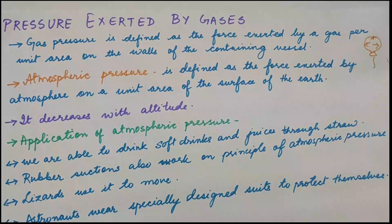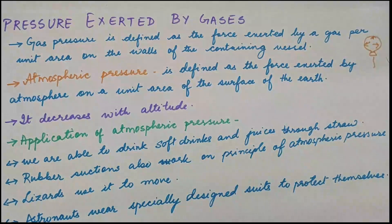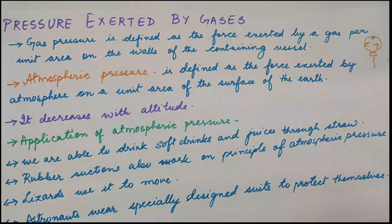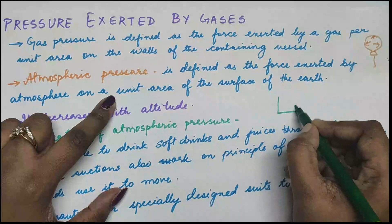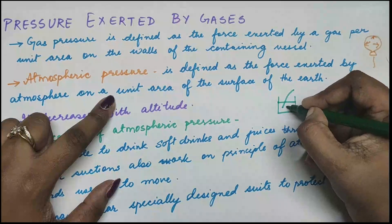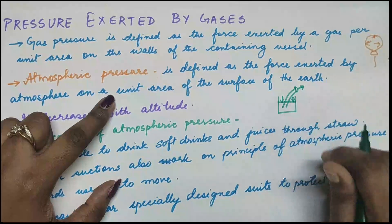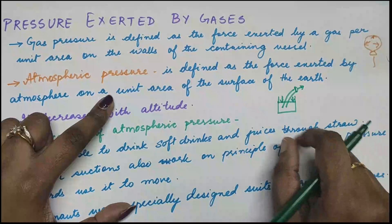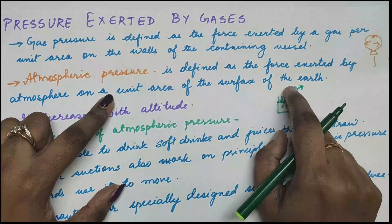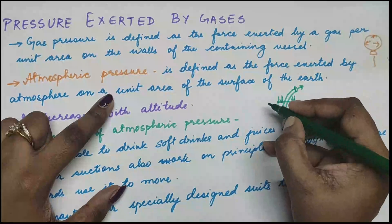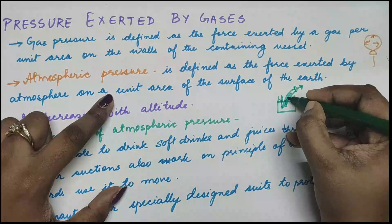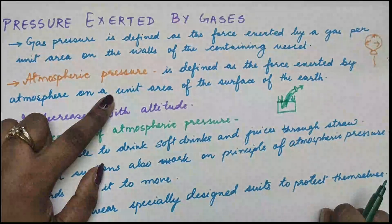Atmospheric pressure plays a vital role in most of our day-to-day activities. For example, you are able to suck juice through a straw. When you suck air through the straw, there is a sudden fall in pressure inside the straw. The atmospheric pressure acting on the surface of the juice in the glass is higher, so it pushes the liquid up into the straw. That atmospheric pressure helps the juice rise up into the straw so you can drink it.